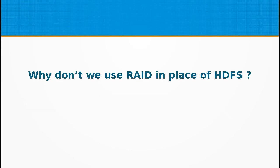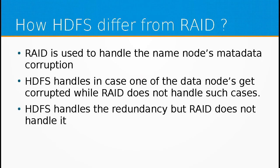Now the question is why don't we use a redundant array of inexpensive disks, which has been around for more than a decade? Why can't it be used in place of a distributed storage system like HDFS in Hadoop? The reason is that HDFS clusters do not benefit from using RAID for data nodes, especially because data nodes handle replication across several nodes, which is a built-in functionality of HDFS. Although RAID can be used for name node disk and secondary name node disk as a backup against failover or corruption of metadata, even if a disk fails in a Hadoop cluster, HDFS can continue to operate without the failed disk — but that is not the case with RAID. So due to this reason, RAID is not the preferred choice in HDFS.